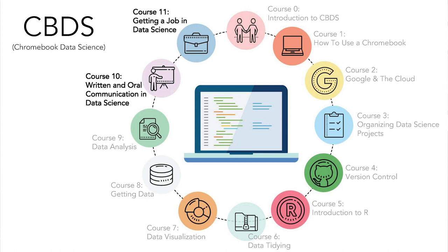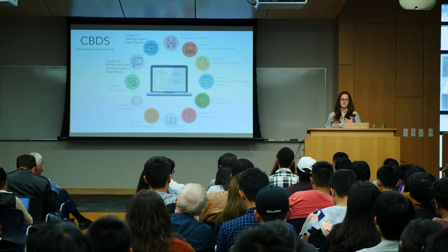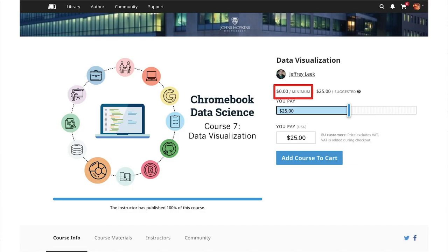The last two courses cover soft skills. Written and oral communication is a critical aspect of data science that isn't always explicitly taught, so we cover how to write a data science report, how to give a presentation, and what matters in those things. The final course is about how to get a job in data science — what pieces you need to apply, what an interview might be like, what your web presence should look like, and where to look for jobs. Those are the 12 courses that make up Chromebook Data Science, all available on LeanPub with a zero-dollar minimum price.